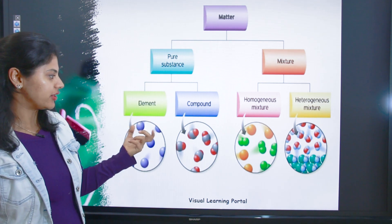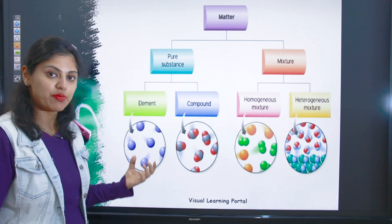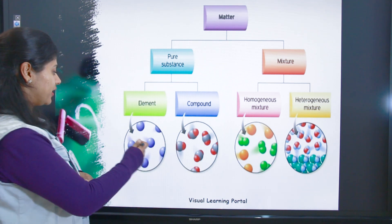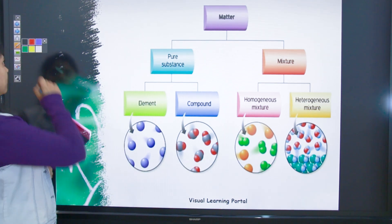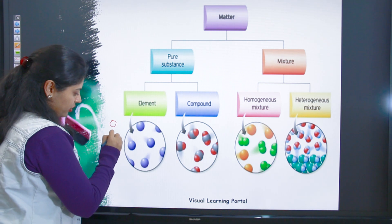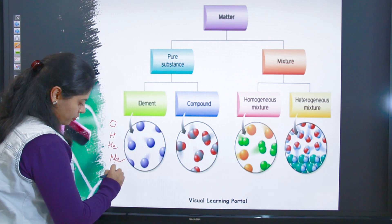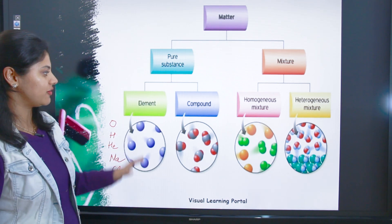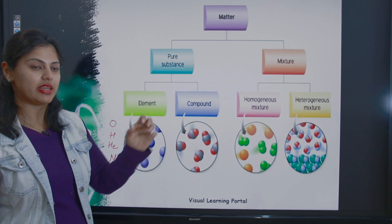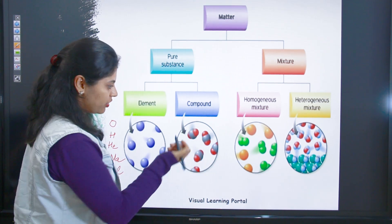Pure substance divides into element and compound. An element has a single type of atom. For example, oxygen element, hydrogen element, helium element, sodium element, chlorine element — these are all pure substances. A compound is a mixture of two or more different kinds of elements — it can be two, three, or four elements combined.